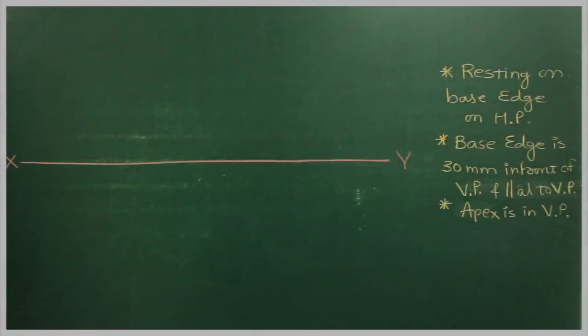In this problem, the pyramid is resting on one of its base edges on HP. The same base edge is 30 mm in front of VP and parallel to VP, and the apex is in VP.